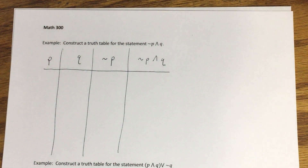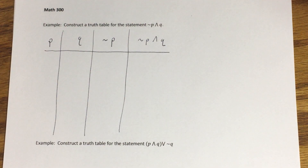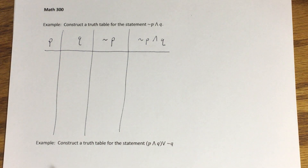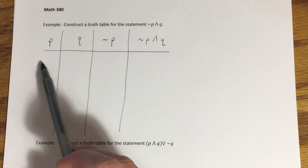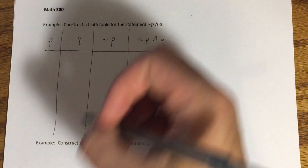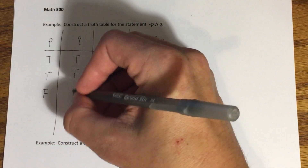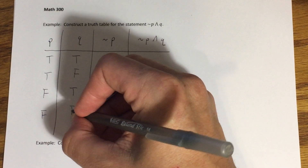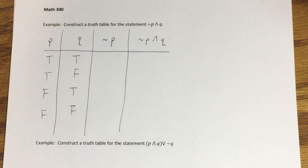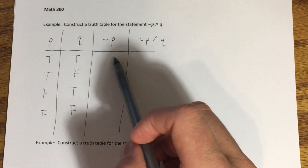We want to consider all possible combinations of truth values for p and q. With two component statements, we end up with four rows. A little later we'll talk about a rule for determining how many rows your truth table will have depending on how many component statements you have. The four combinations are: p true and q true, p true and q false, p false and q true, and both false.